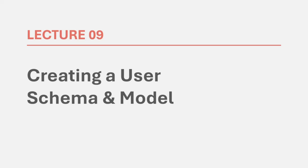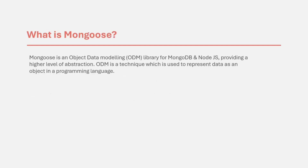In the last lecture, we connected our Express application to the MongoDB database which we created in Atlas server, and we did that using the Mongoose package. Mongoose is an object data modeling library for MongoDB and Node.js, providing a higher level of abstraction. Object data modeling is a technique used to represent data as an object in a programming language.